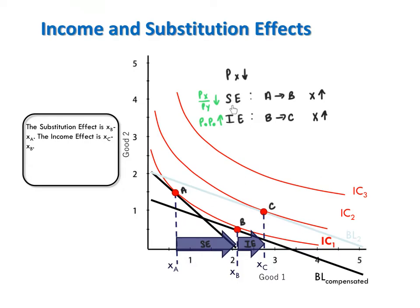The substitution effect shows the effect on consumption due to a change in the relative price of x in terms of y, holding utility constant. That's exactly what happens from bundle A to bundle B. First note that since A and B are both on IC1, utility is held constant from A to B.